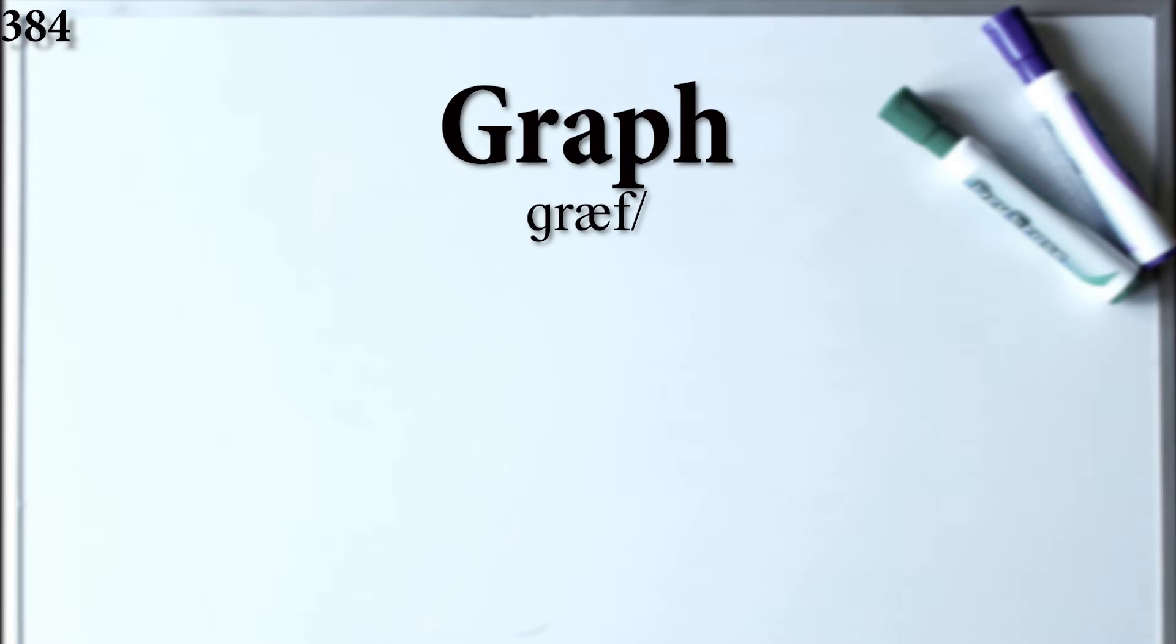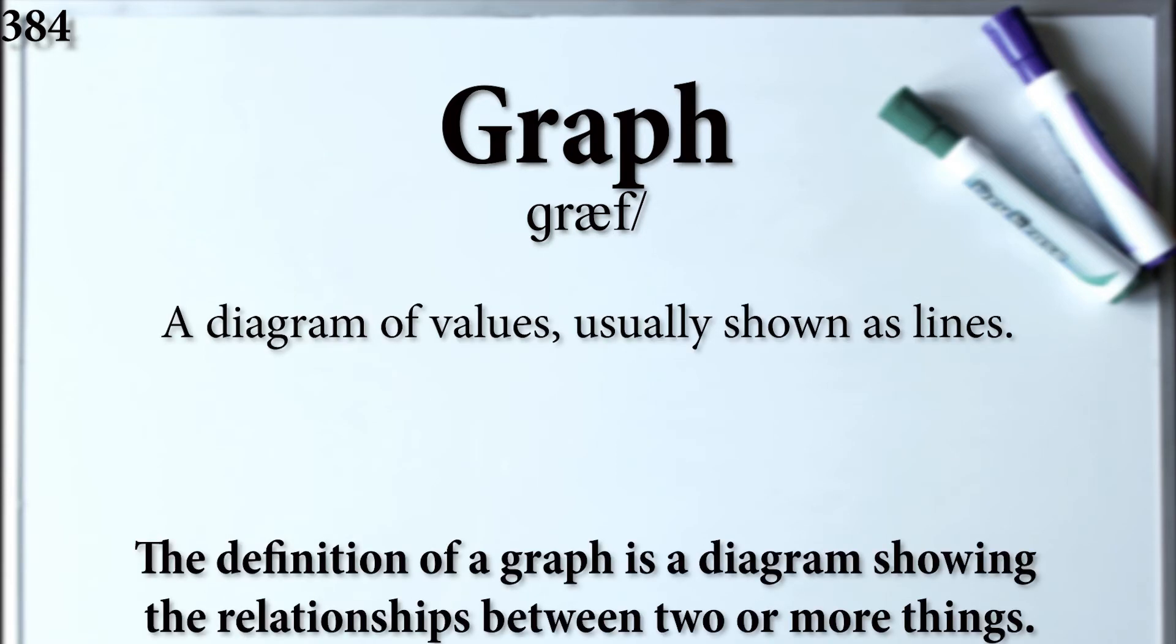Graph. The definition of a graph is a diagram showing the relationships between two or more things.